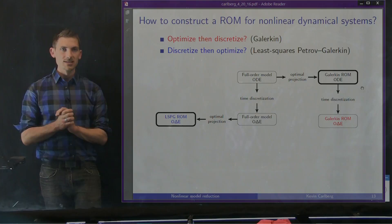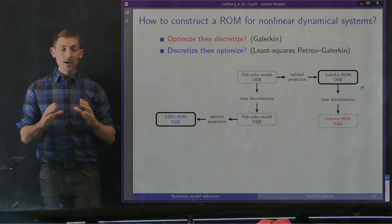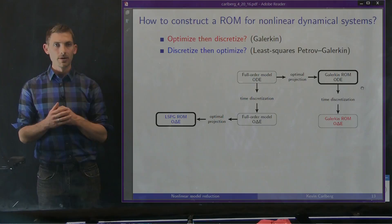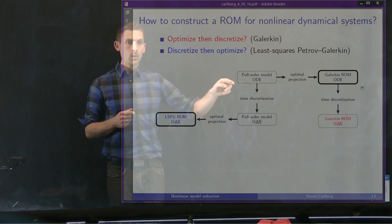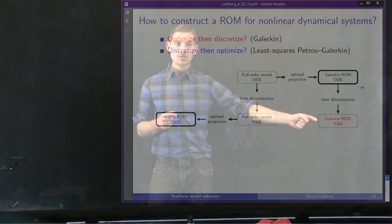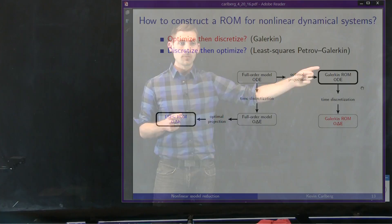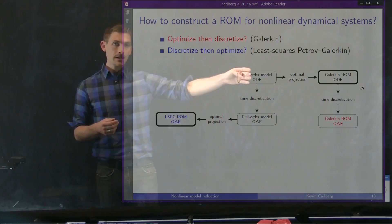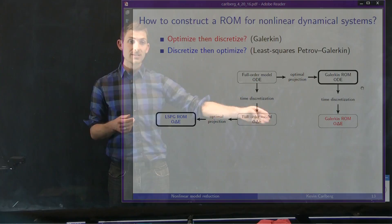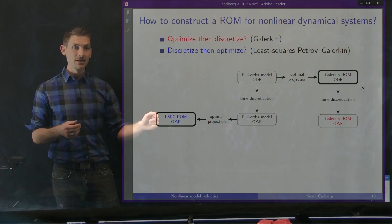This leads to a fundamental question: how do we construct a ROM for nonlinear dynamical systems? We can interpret the Galerkin reduced order model as optimizing-then-discretizing: starting with the full order model ODE at the time-continuous level, introducing an optimal projection, then applying time discretization to obtain a Galerkin ROM ODE at the time-discrete level — optimal in some sense at the continuous level. In contrast, our approach adopts a discretize-then-optimize strategy: start with the full order model, introduce a time discretization, get a time-discrete full order model, then introduce an optimal projection at the time-discrete level, yielding the least-squares Petrov-Galerkin or LSPG reduced order model.